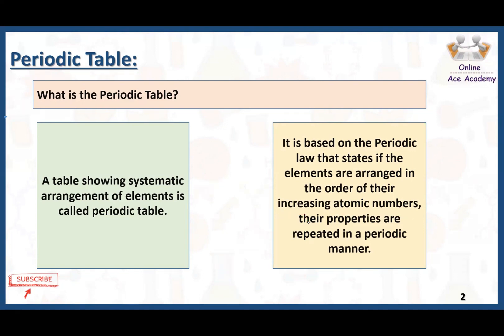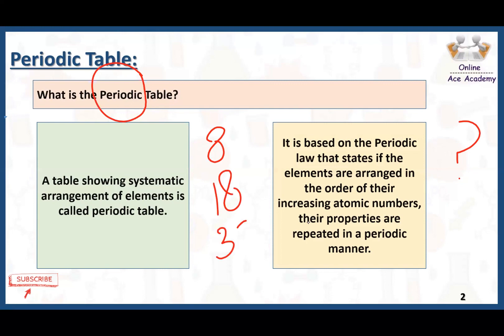The second concept here is the periodic manner. Elements are arranged in the periodic table in such a way that after some interval of elements, the properties of those elements start repeating again — 'periodic' here means repeating. After an interval of 8, 18, or 32 elements, the properties start repeating. This repetition is called a periodic manner, and that is why the table is called a periodic table.